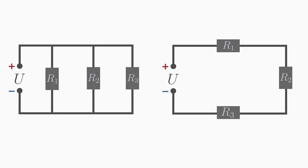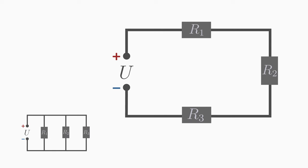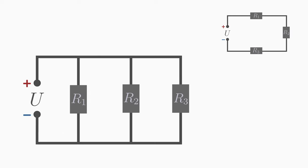Difference number one: look at how the three resistors are connected to each other. In a series circuit, the positive pole of the voltage source is connected to one single resistor, and the negative pole is also connected to one single resistor. The resistors in a series circuit form a chain. In a parallel circuit, on the other hand, you connect the positive pole of the voltage source to three ends of the three resistors, and you do the same with the negative pole.